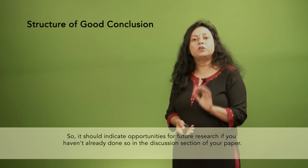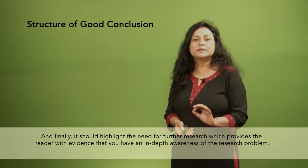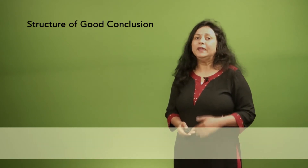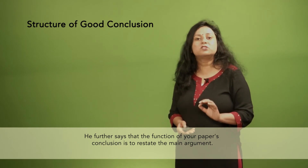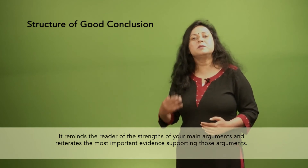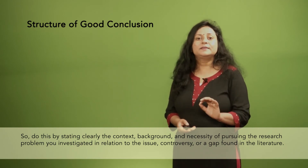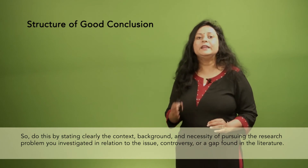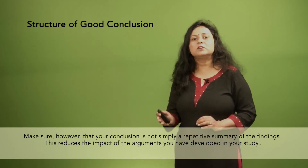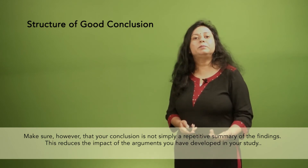It should indicate opportunities for future research if you haven't already done so in the discussion section of your paper. And it should highlight the need for future research, which provides the reader with evidence that you have an in-depth awareness of the research problem. The function of your paper's conclusion is to restate the main argument — it reminds the reader of the strength of your main arguments and retraces the most important evidence supporting those arguments. Do this by stating clearly the content, background, and necessity of pursuing the research problem you investigated in relation to the issue, controversy, or gap found in the literature. Make sure, however, that your conclusion is not simply a repetitive summary of the findings, as this reduces the impact of the arguments you have developed in your study.